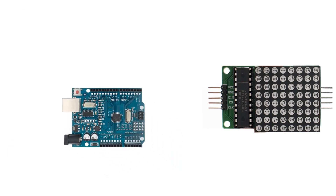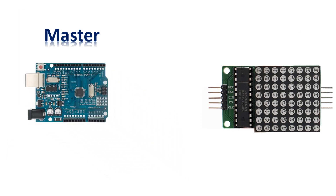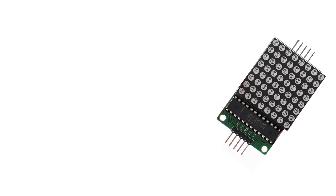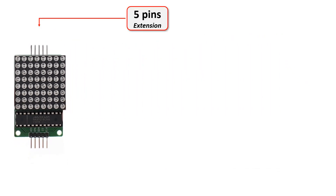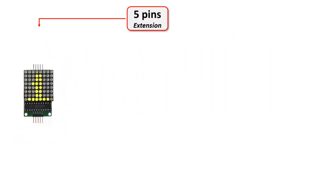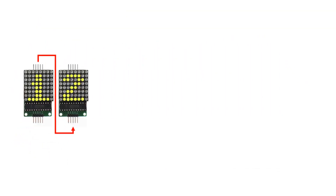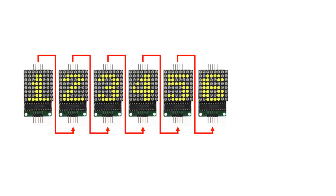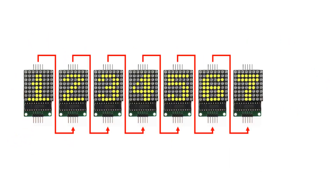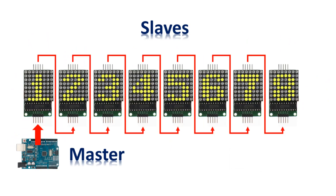This controls the LED matrix through master-slave communication, where the Arduino board is the master and the MAX-7219 module is the slave. The module also provides a 5-pin extension interface through which additional LED modules can be cascaded, expanding the visual spectrum with more LEDs if your application requires it.